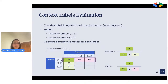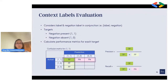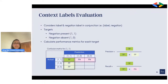For contextual labels, we did a separate evaluation where we consider the label and the contextual label together. For example, when evaluating the negation label, we have targets of whether it's present or absent, and we created a confusion matrix to calculate the negation scores. One important thing to note is that there's no zero-one label — if the label doesn't exist, we can't have a negation for a label that doesn't exist.